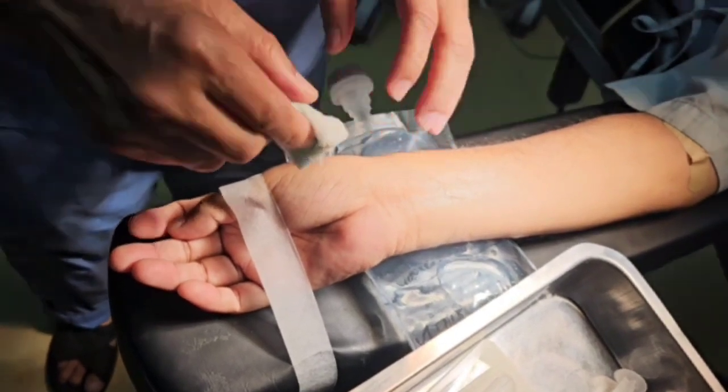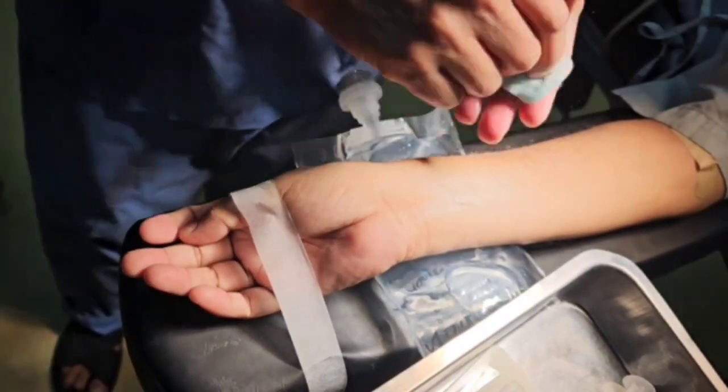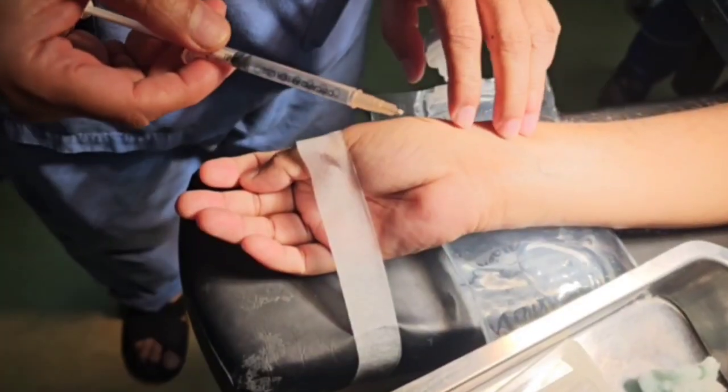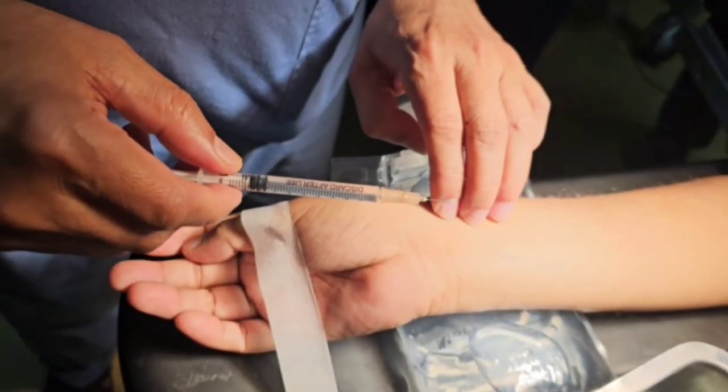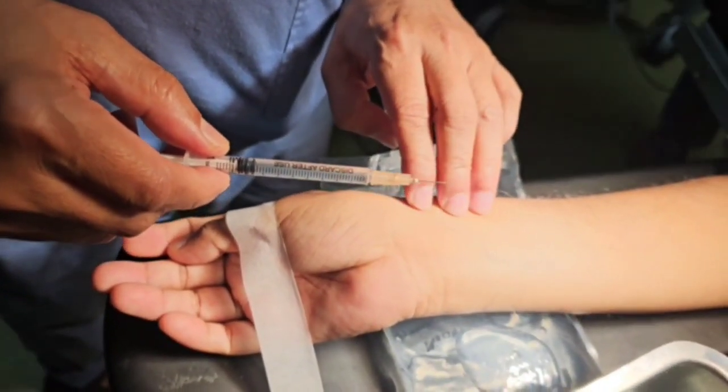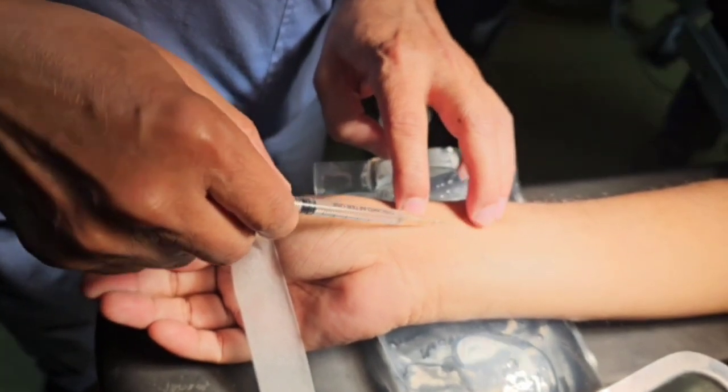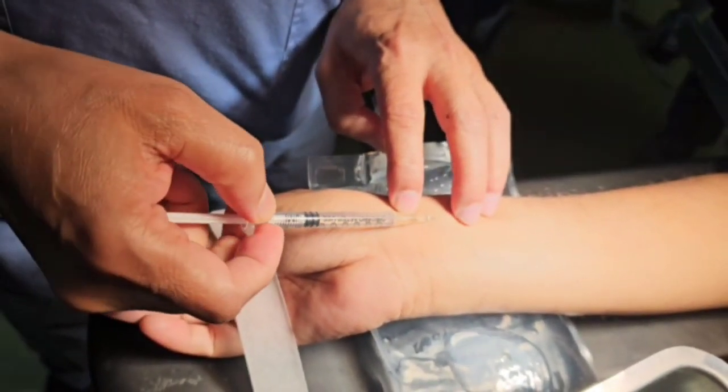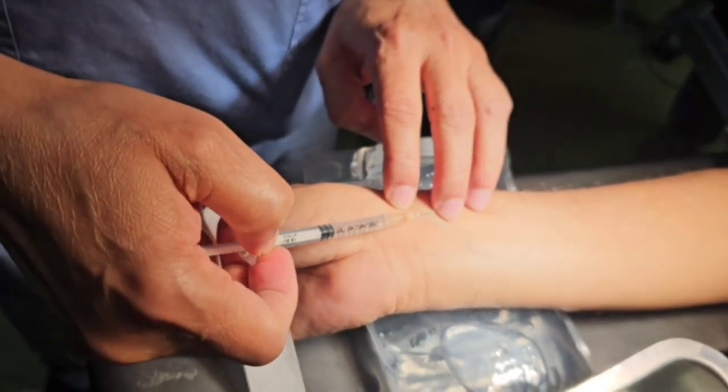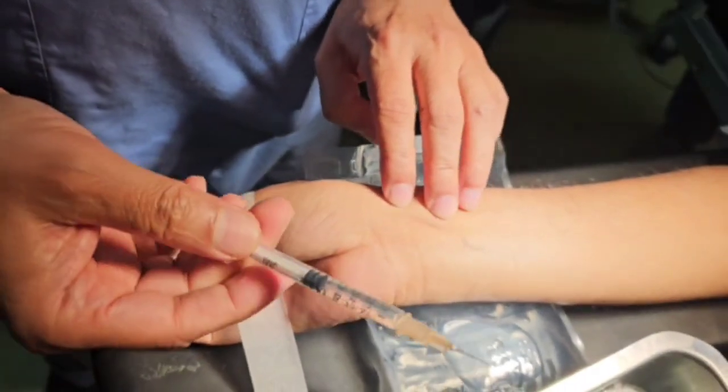Then we need to make a small wheal of 1% lidocaine to decrease pain during cannulation and reduce the occurrence of arterial spasm. Sometimes the catheter may not easily pass through the skin. To overcome this, we need to make a small nick on the skin with a needle or blade at the insertion site.